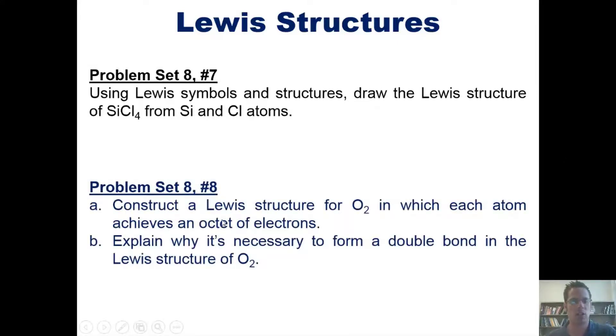In this question, I'm asking you to construct a Lewis structure for O2 in which each atom achieves an octet of electrons, and then explain why it's necessary to form a double bond in the Lewis structure of O2. I won't show you how to do this one, but we'll invite you to do it on your own.